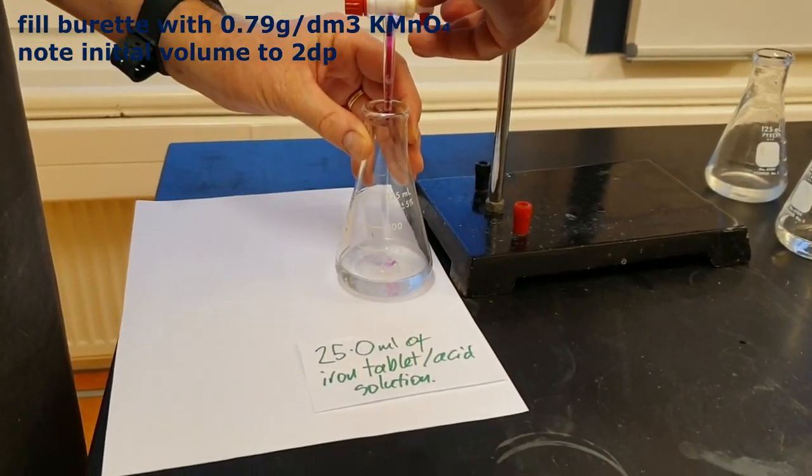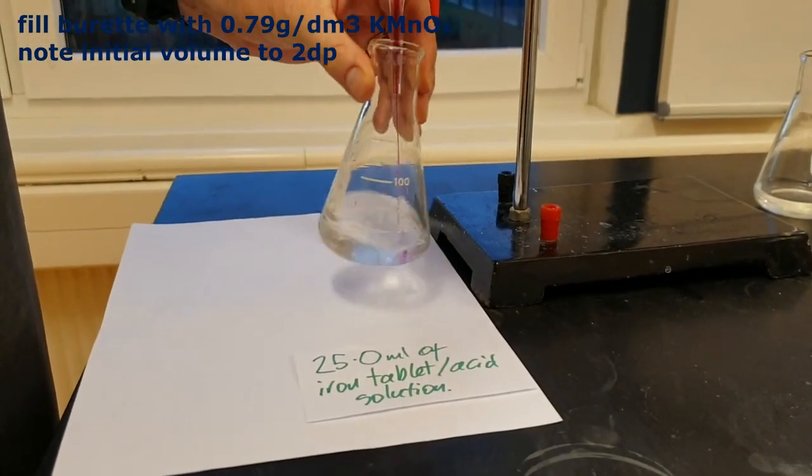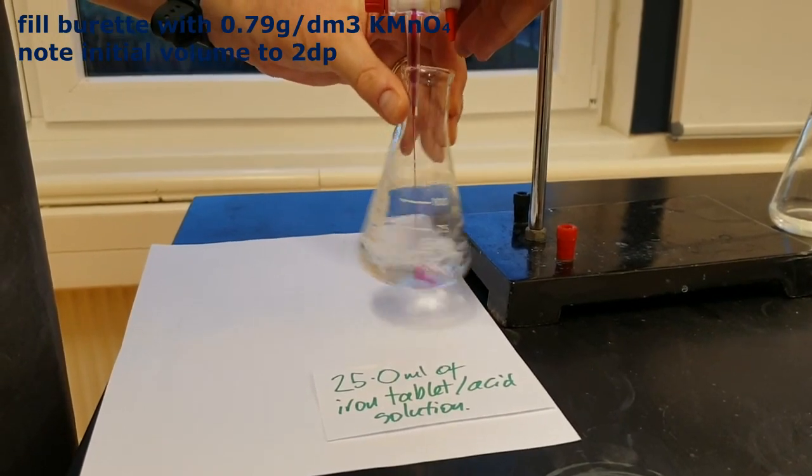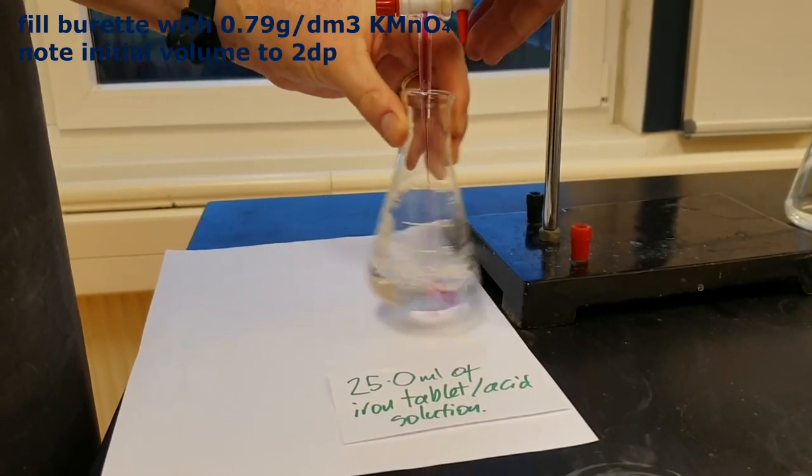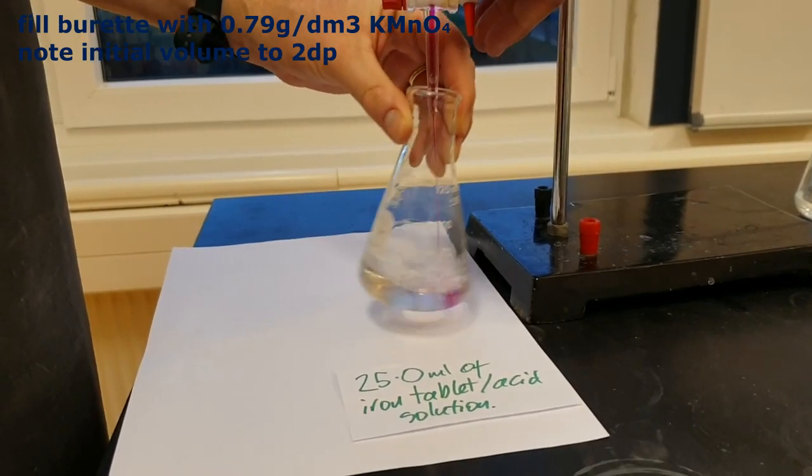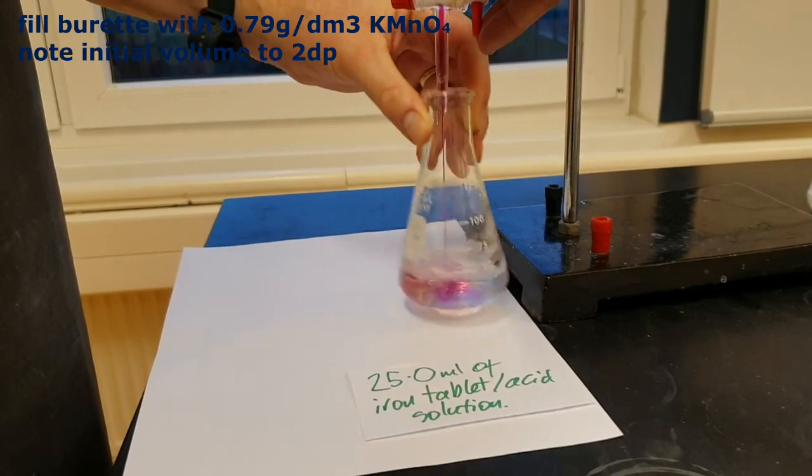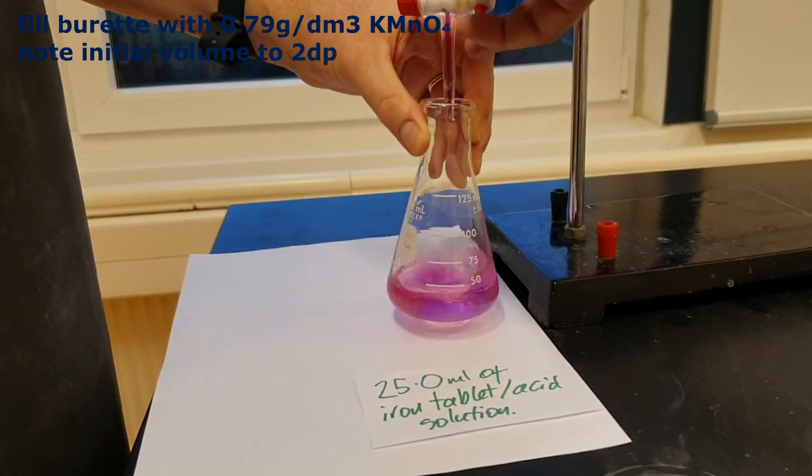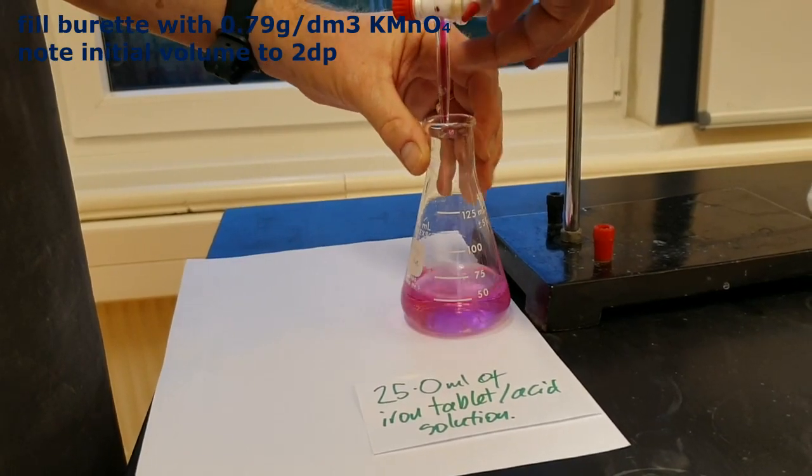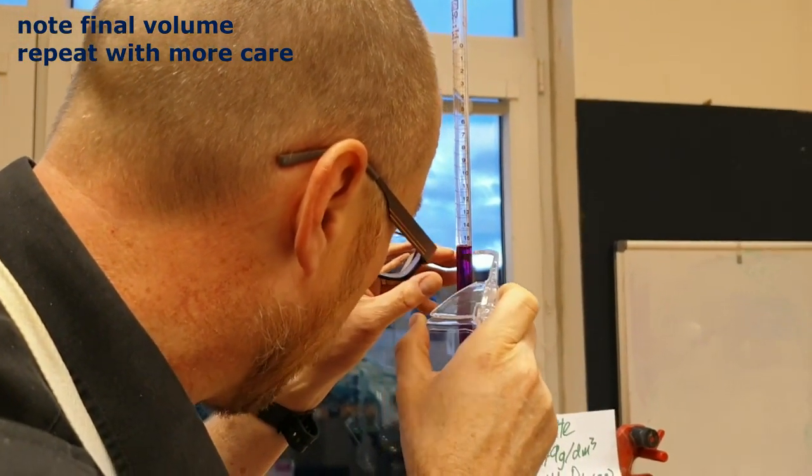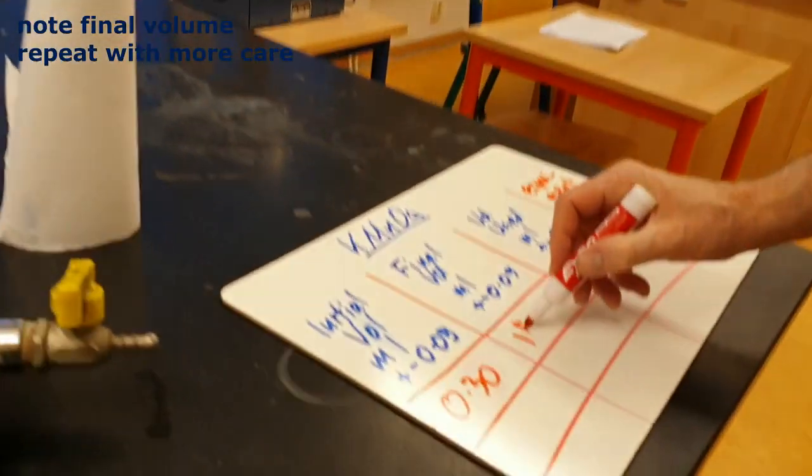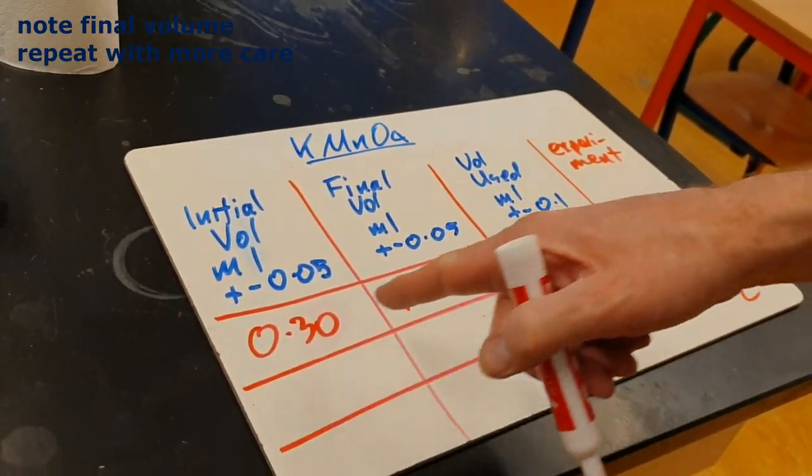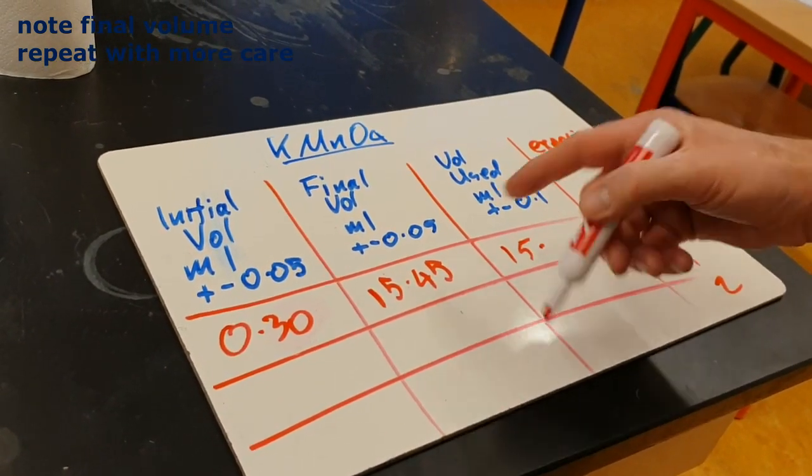And it's self-indicating. When the purple colour remains, the experiment's over. Okay, that's over. And that gives me a volume of 15.45 millilitres. So 15.45 millilitres. And that gives me the total volume used is going to be 15.15.